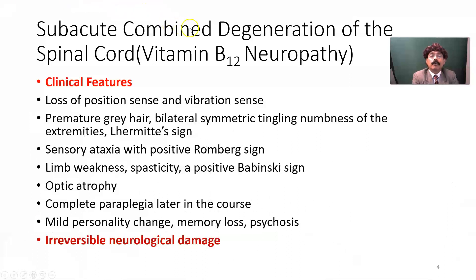In subacute combined degeneration of the spinal cord or vitamin B12 neuropathy, what are the clinical features? Loss of position sense and vibration sense, because of demyelination of the posterior column. Premature gray hair. Bilateral symmetric tingling and numbness of the extremities, and Lhermitte's sign.